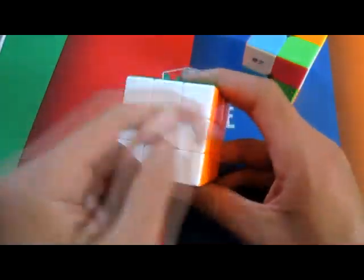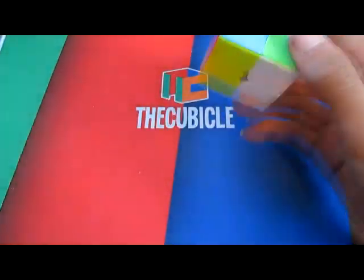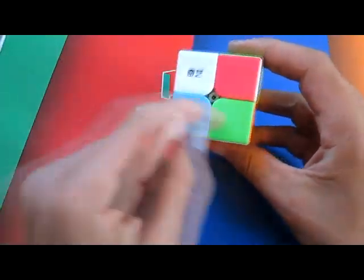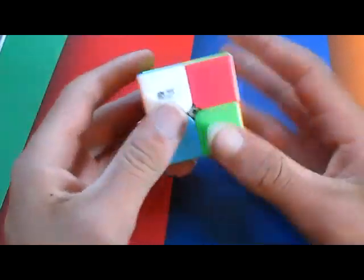So on the 3x3 you would solve the first layer, the middle layer, and then the top layer. On the 2x2 you would solve just the first layer, the bottom layer, and then the top layer because there is no middle layer.